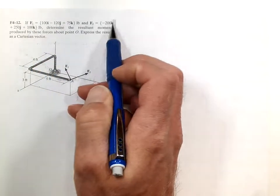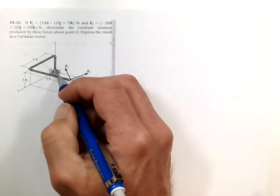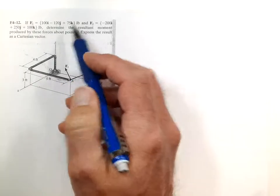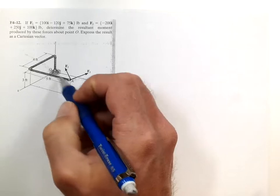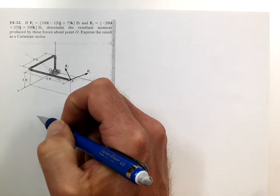If F1 equals that and F2 equals that, determine the resultant moment produced by these three forces about point O. Express the result as a Cartesian vector. Because we have forces and vectors, we can simply add those, and then we have the distance vector, so we'll do the cross product to solve this one.